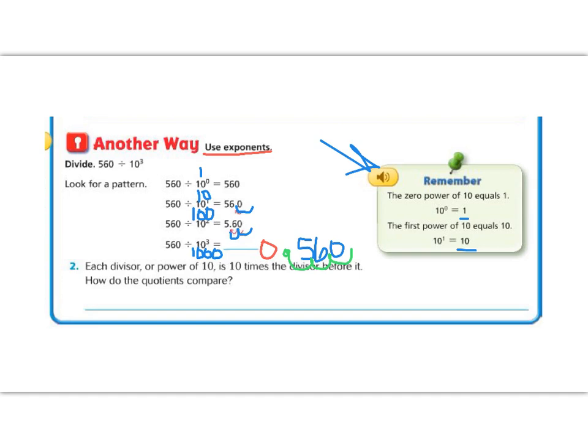Question number two says, each divisor or power of 10 is 10 times the divisor before it. So how do the quotients compare? And when they say, how do they compare, we mean are they getting bigger, are they getting smaller? So if we look, we went from 560 to 56 to 5.6 to 0.560. So each quotient is getting smaller by 1 tenth.